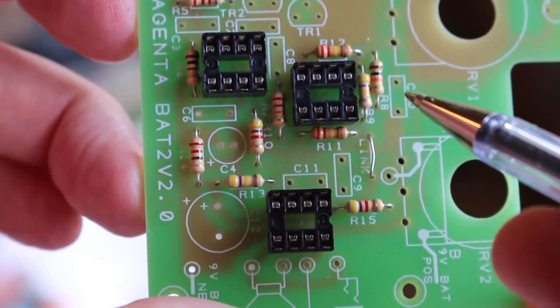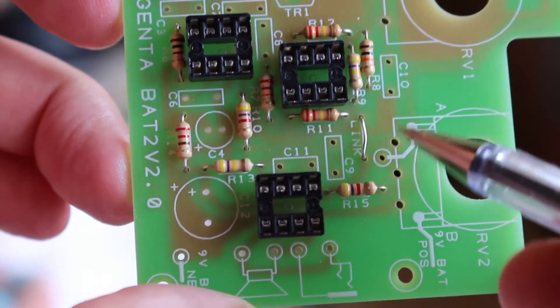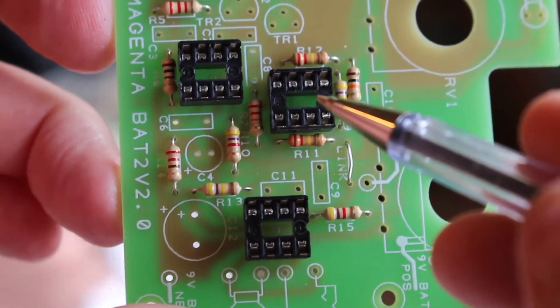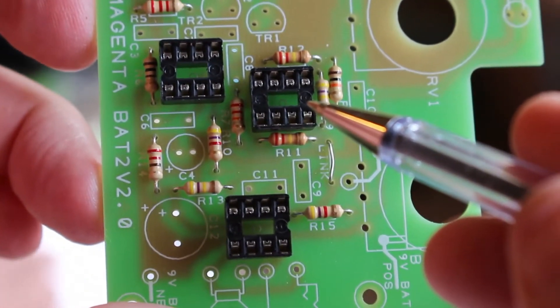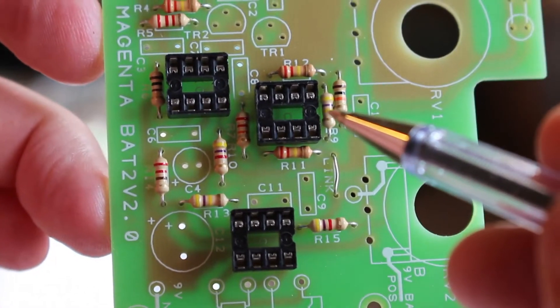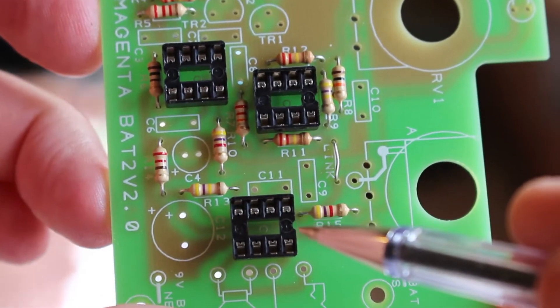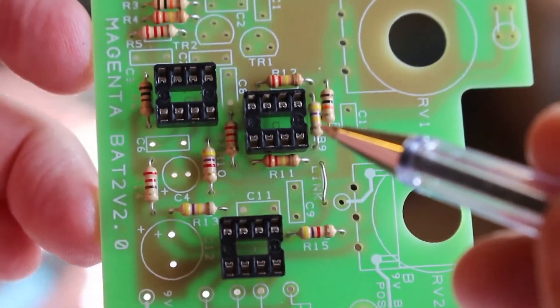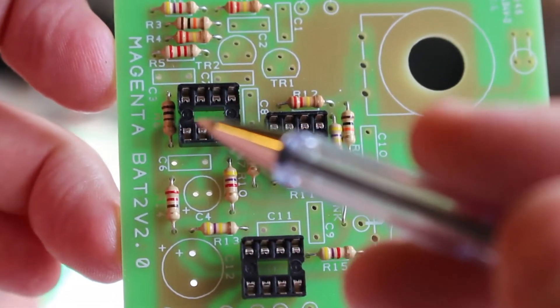Once you have all the resistors in place, you use one of the legs to do this link here. The next items to be installed are the chip holders. You should try and keep the chip holder the right way around so you can see there's a notch here and that lines up with the pattern on the PCB.